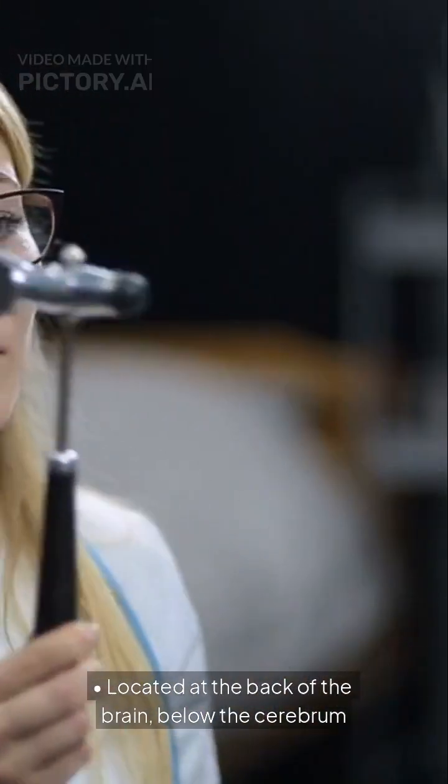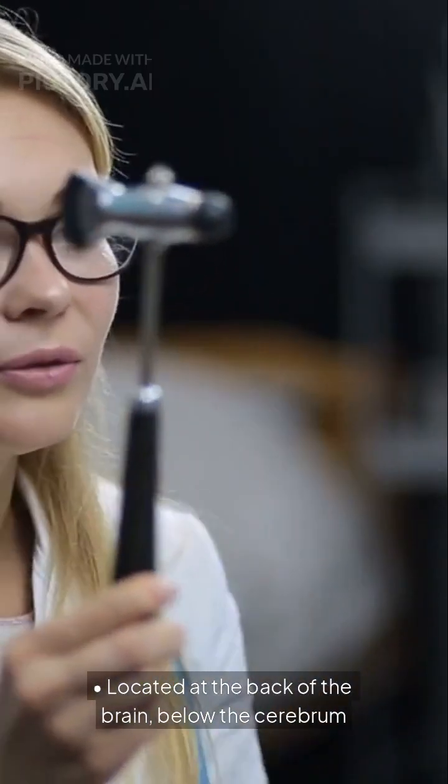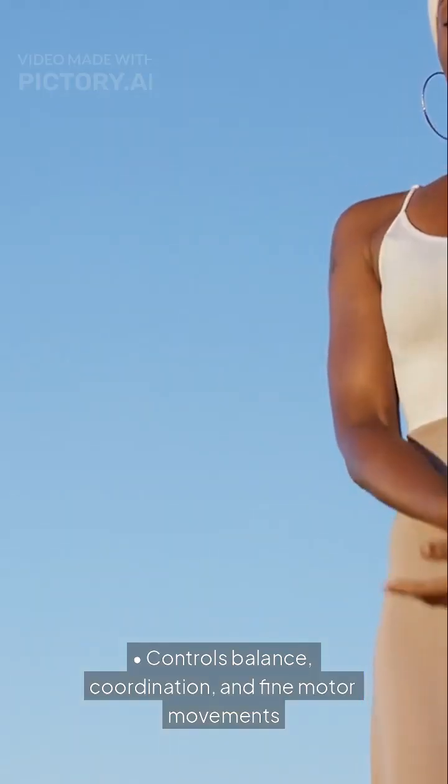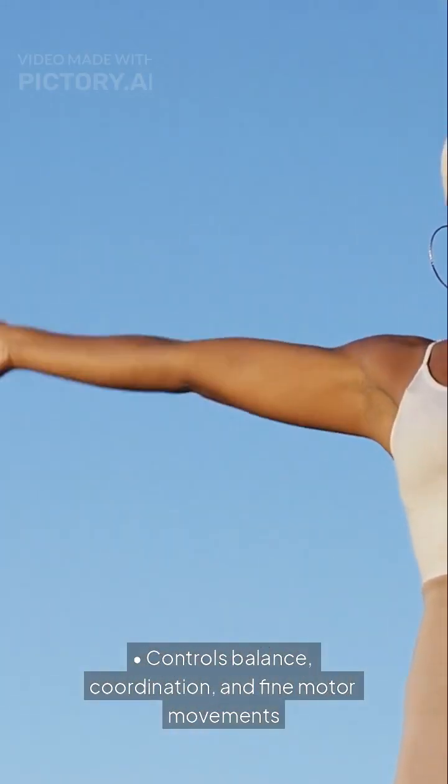The cerebellum is located at the back of the brain, below the cerebrum. It controls balance, coordination, and fine motor movement.